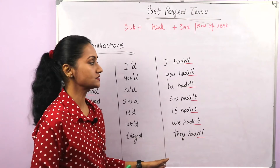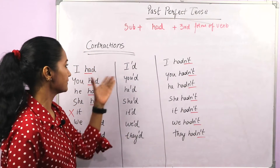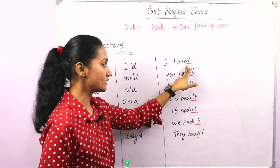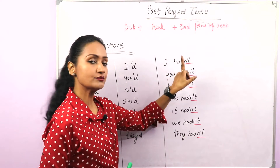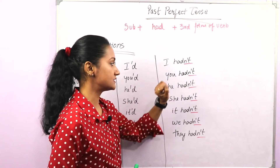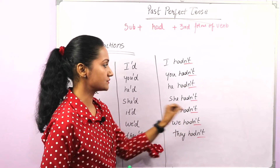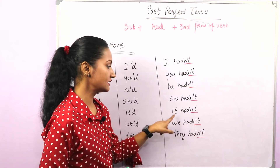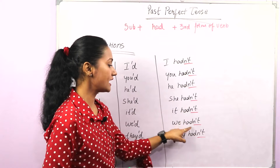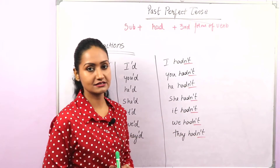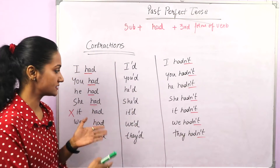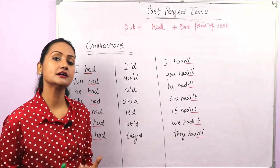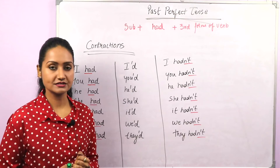For negative contractions, take 'had not' and add apostrophe T to 'had': I hadn't, you hadn't, he hadn't, she hadn't, it hadn't, we hadn't, they hadn't. Use contractions in informal conversation or informal writing.